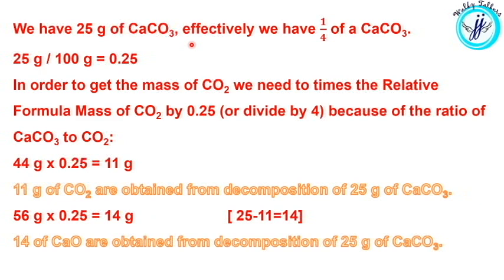We have 25 grams, which is 1/4 of calcium carbonate's formula mass. Dividing 25g by 100g equals 0.25. Multiplying 44g by 0.25, the answer is 11 grams. So if we decompose 25 grams of calcium carbonate, we get 11 grams of carbon dioxide.